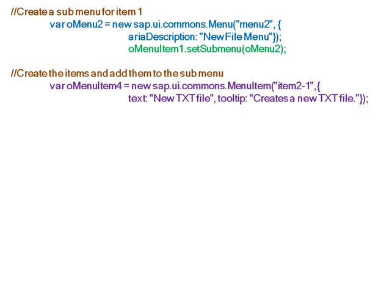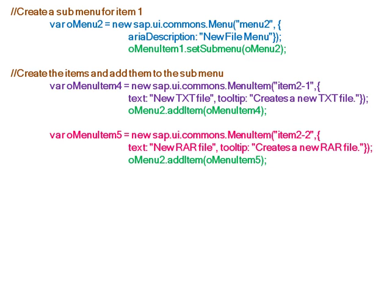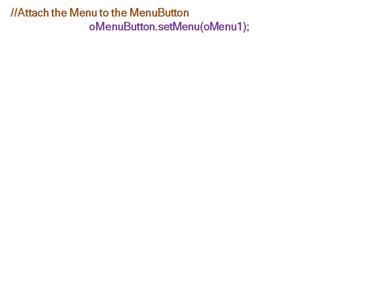For this sub-menu, we create two items: menu item 4 with text 'New TXT File' and a tooltip, and menu item 5 with text 'New RAR File' and a tooltip. Both are added to the sub-menu. Finally, the main menu is attached to the menu button.